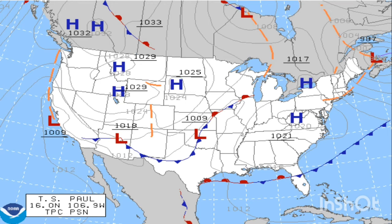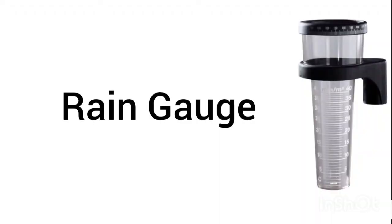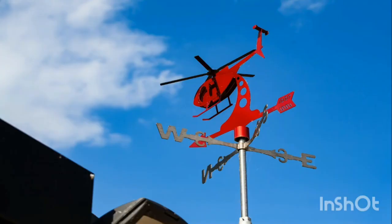Our next instrument is the rain gauge. This is simply a cup with a ruler in units such as inches or centimeters, which measures the amount of rain that has fallen. Scientists use this tool to see the rain pattern and more accurately predict the next time it will rain.